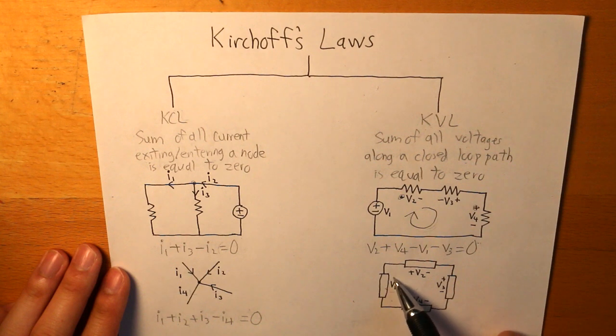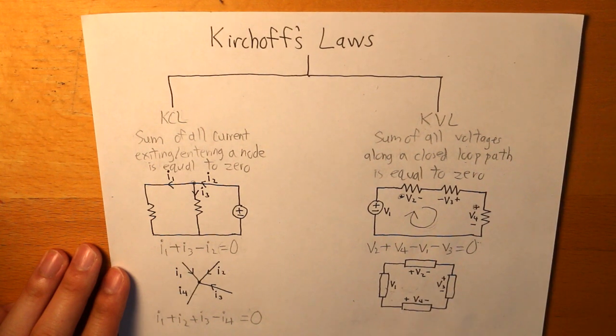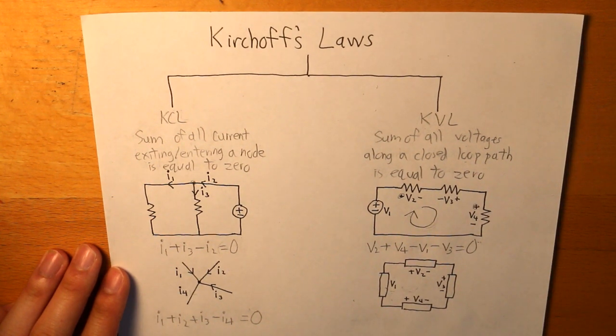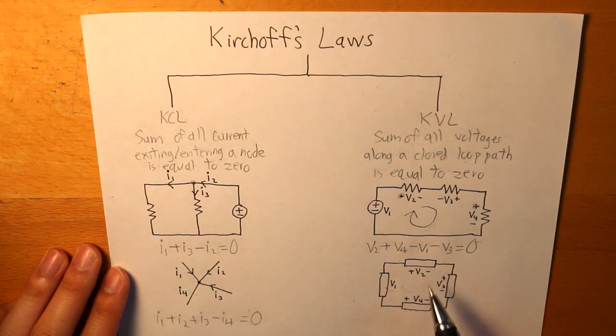And now we have to determine what V1 is, what the polarities are. And we can do this again by drawing another loop here.